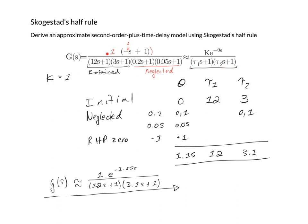We'll figure out the gain by writing the system in gain time constant format, and we'll start out with these initial values folded in. So the retained time constants go over here. If there were any dead time, it goes there.